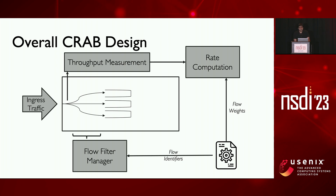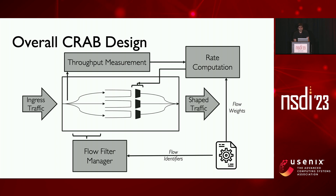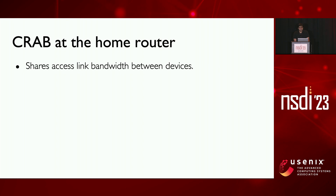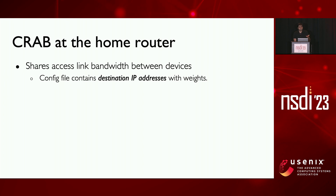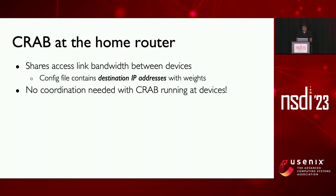To measure flow demands, we measure throughput of flows over multiple RTTs at the ingress. These measurements, along with the flow weights from the config file, are fed to the rate computation module, which performs the reallocation and bandwidth probing logic discussed earlier. This calculates the rate of each flow group and assigns a dequeue rate to each queue. Over time, traffic is shaped as desired as senders react to the throttled rates. Crab can also be deployed at the home router to share access link bandwidth between devices, and we require no coordination between Crab running at the home router and Crab running at the end device.